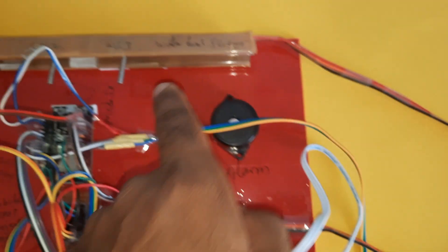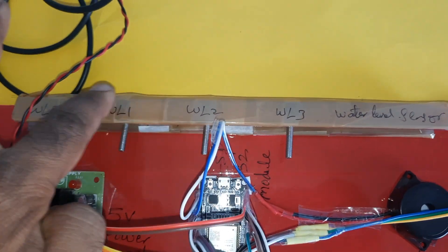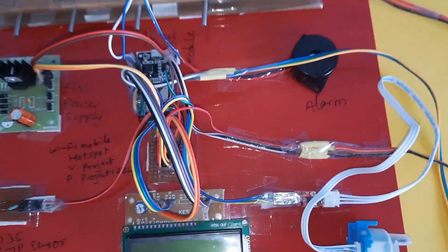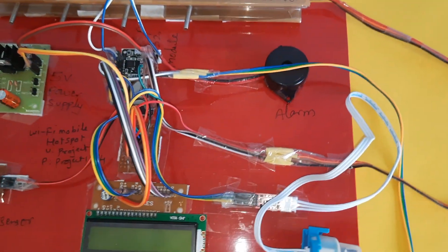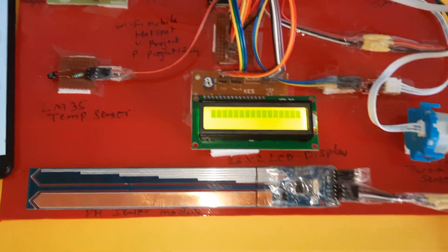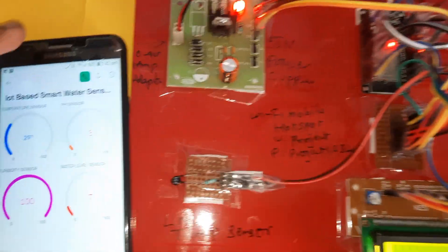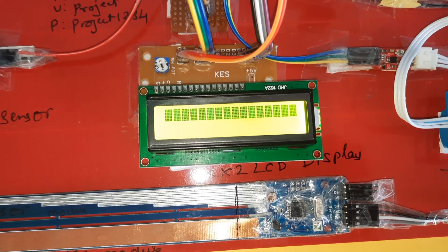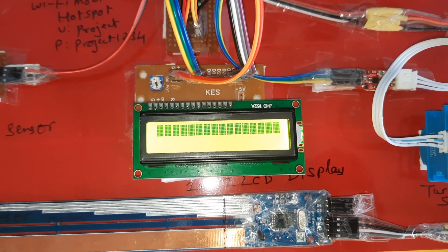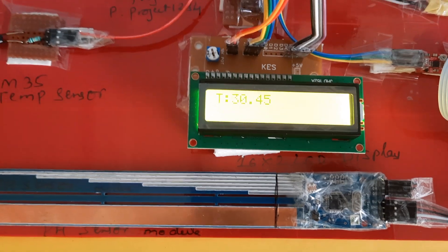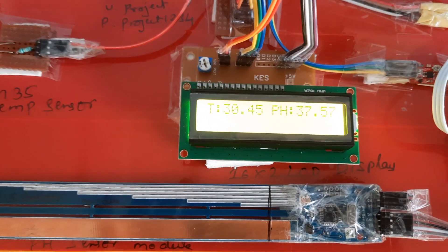The sensors used are: LM35 temperature sensor, pH sensor, turbidity sensor, and water level monitor with levels 0, 1, 2, 3 and full, plus alarm. Now we are starting the project. Once mobile hotspot is connected, it will display data — water level monitoring system, temperature, pH sensor readings.